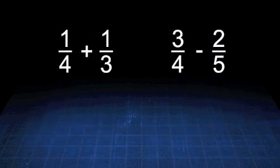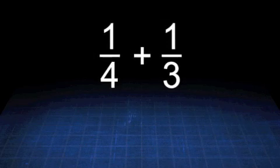When adding and subtracting fractions, denominators have to be the same. When denominators are not the same, we have to change them. For example, adding 1 fourth and 1 third are not possible until both denominators are equal.